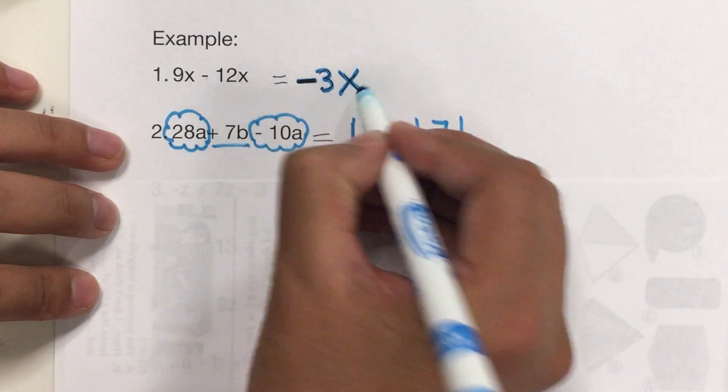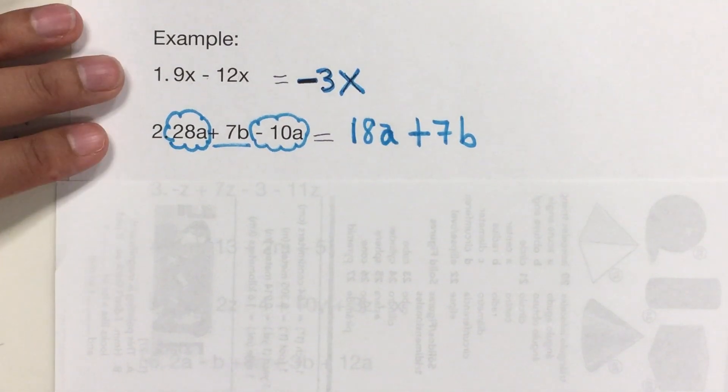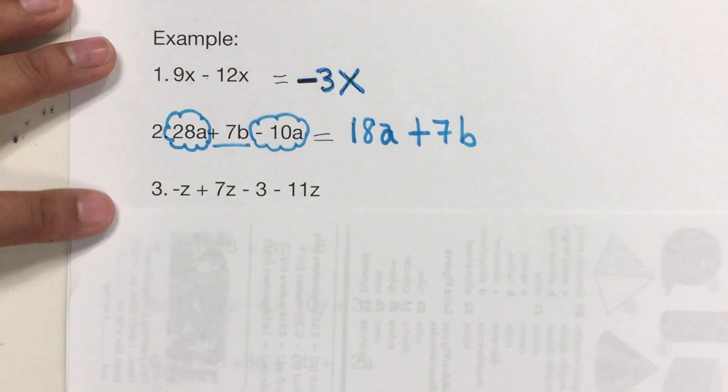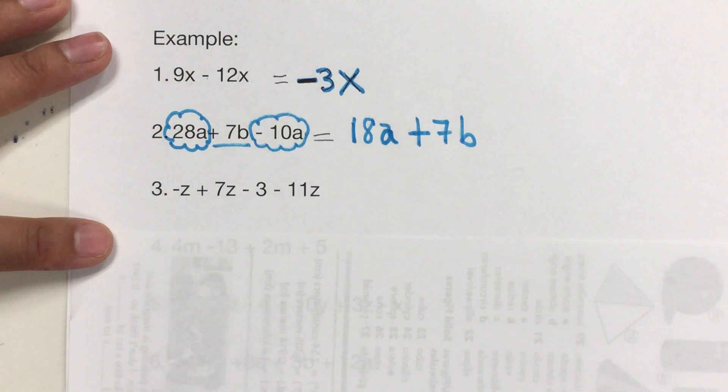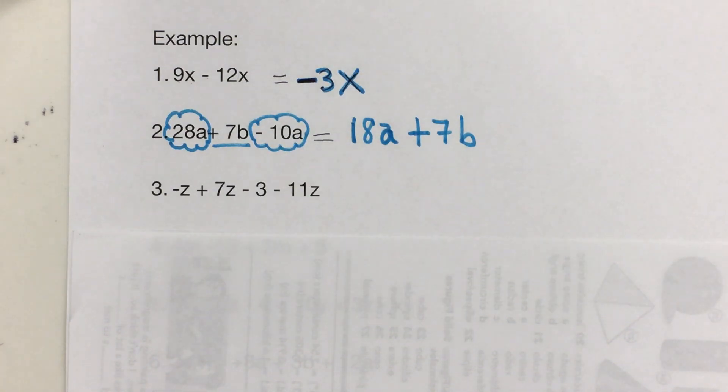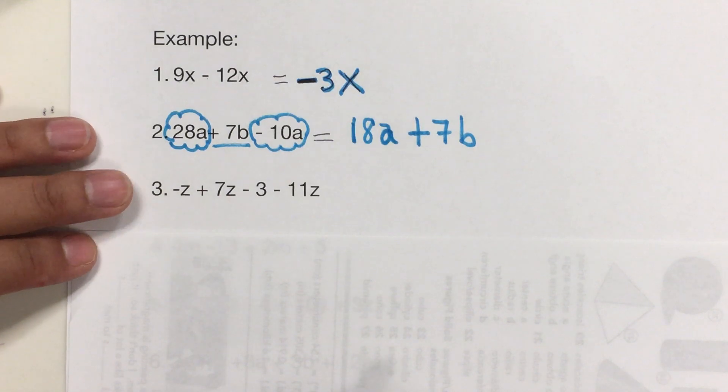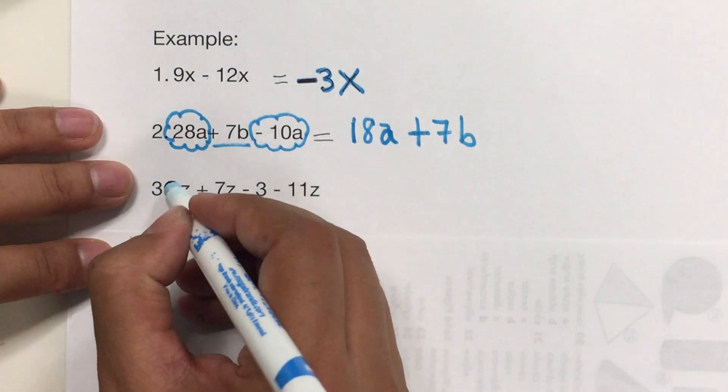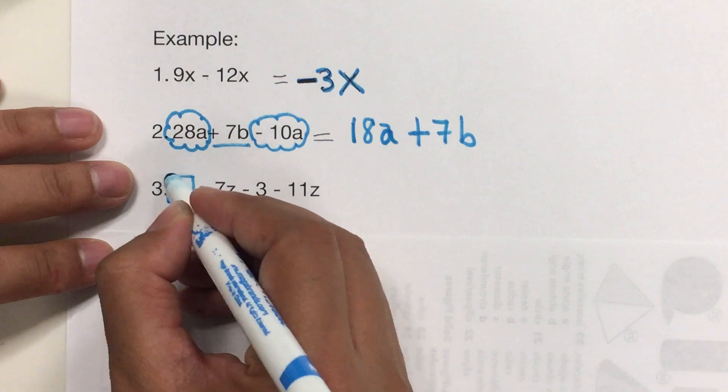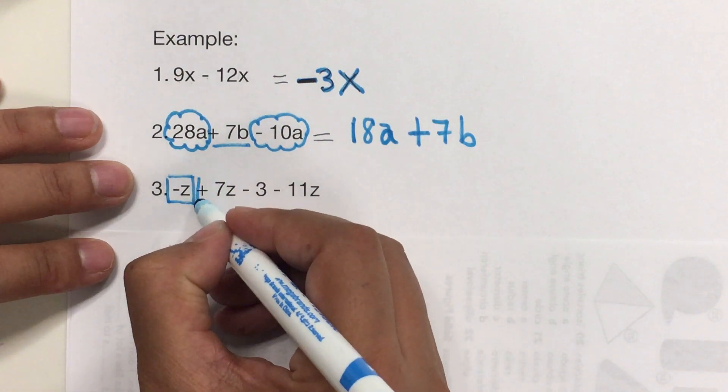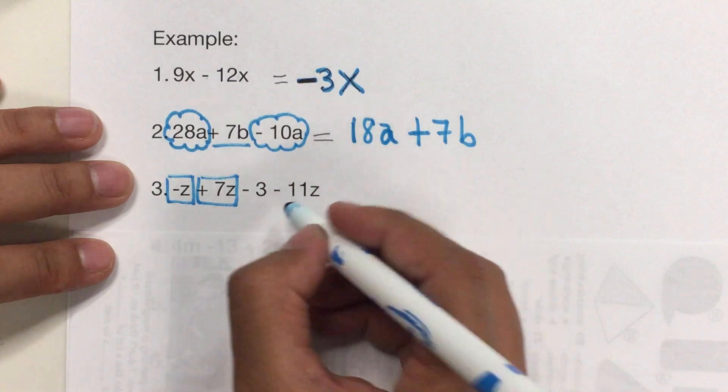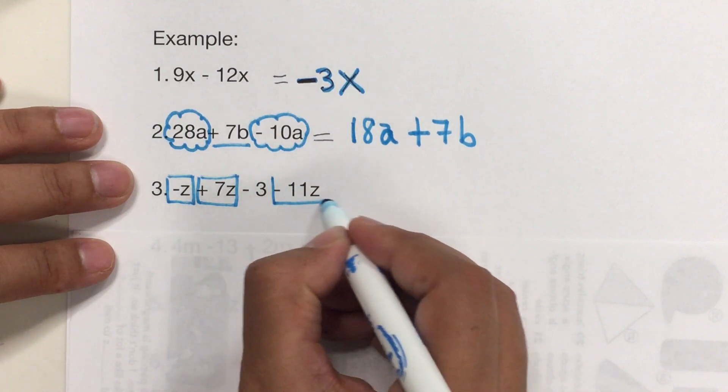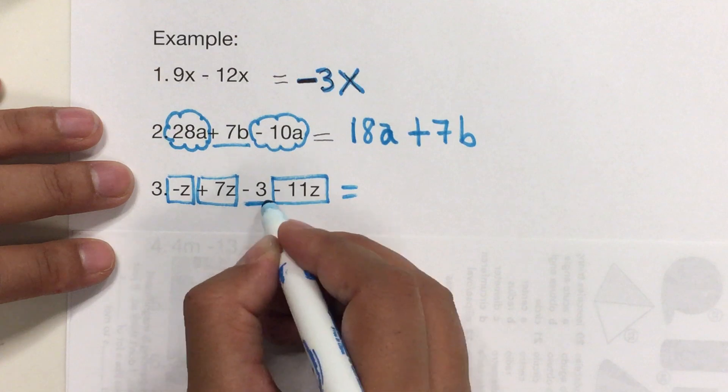Let's do the next one. Solo estamos buscando que tenga la misma variable y el mismo exponente. And we have to pay attention to the signs. Los signos son muy importantes. So, in here, I have z, negative z. I have positive 7z. And I have negative 11z. And this is lonely.